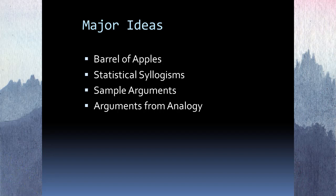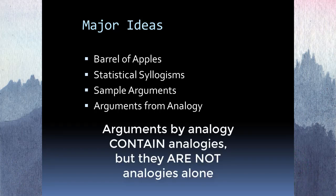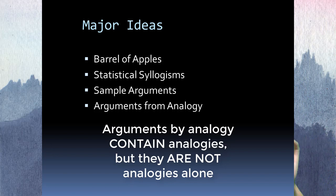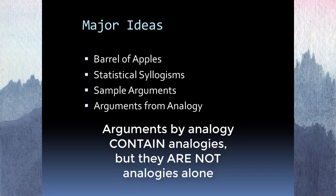Arguments by analogy help us understand one realm by reference to another — they say this thing is kind of like this other thing, and here's the conclusion we can draw. That shouldn't be confused with just an analogy. An argument by analogy contains an analogy in addition to other premises and a conclusion. It has an analogy but also other stuff, so it's arguing something from an analogy, whereas an analogy by itself just makes a comparison.